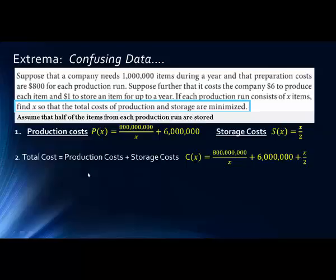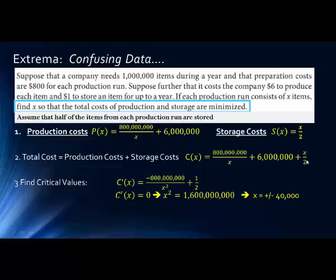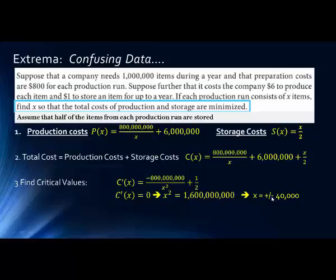Production costs and storage costs. So we add these together to get our total cost function, which is what we're trying to minimize. We now take the derivative of that. Be careful here. A lot of people get confused about the derivative of x/2. Notice that x/2 is just the same thing as (1/2)x, which means the derivative is just 1/2. Once I set this equal to zero, I get x² equals, this is cross multiplying, and I get x = ±40,000. We can't have negative items in a production run. So our production run is minimized, our costs are minimized when each production has 40,000 items in it. Here we've done the second derivative test just to confirm that it is indeed a minimum.